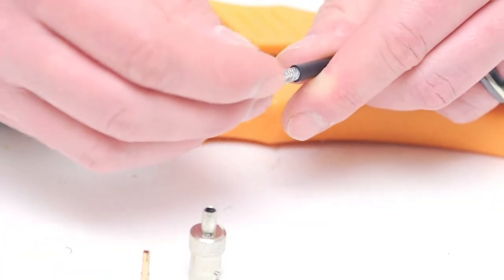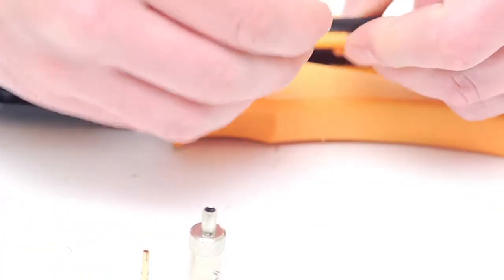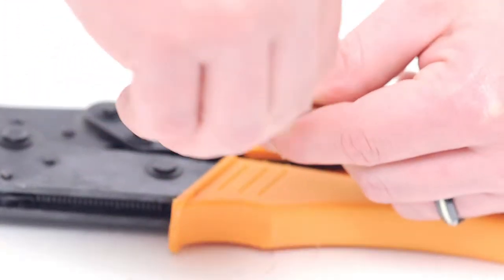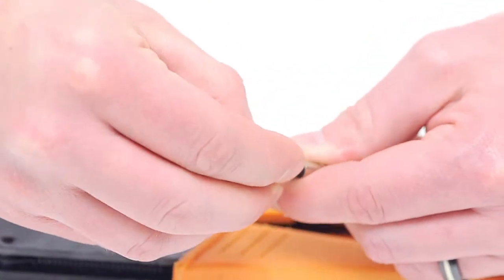Take the ferrule and slide it onto the cable. Using your hands, fold back the braided shield on top of the jacket and slide the ferrule over the braid and the jacket.